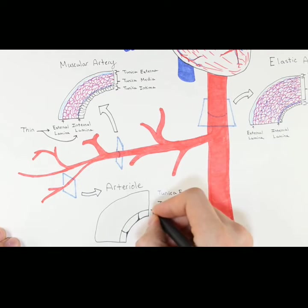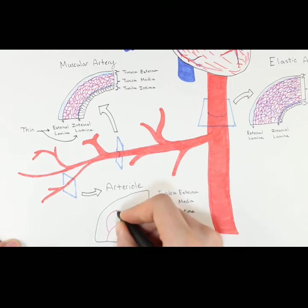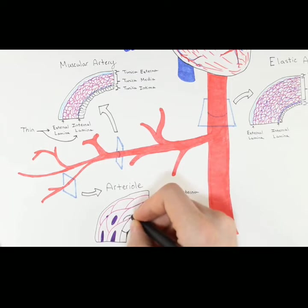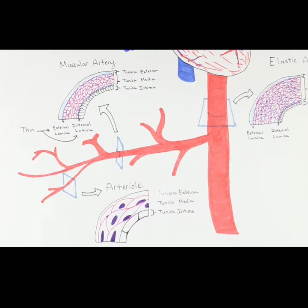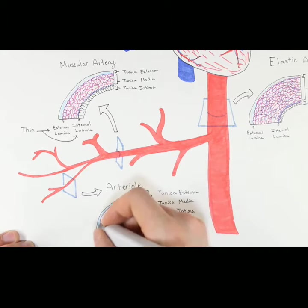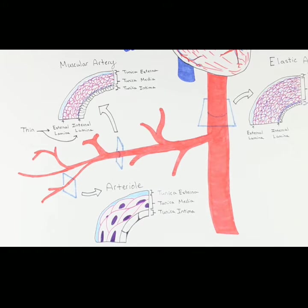The arteriole has a very narrow endothelial tunica intima. It has a one to three cell layer thick tunica media, which lacks elastic fibers, and it also contains a thin tunica externa. The arterioles do not contain an external or internal lamina, like the muscular or elastic arteries.